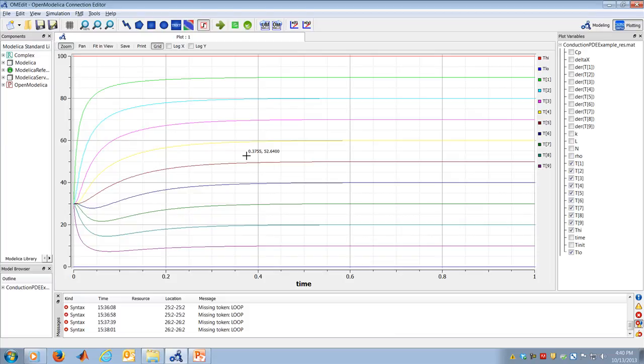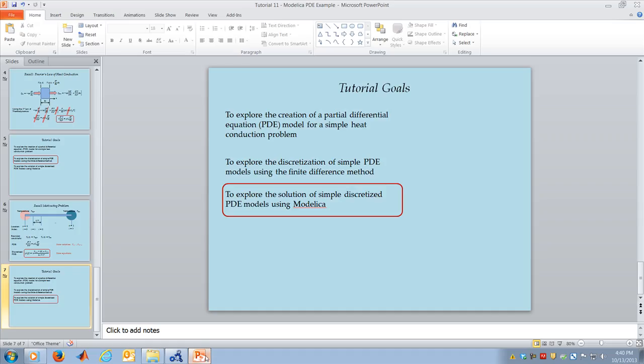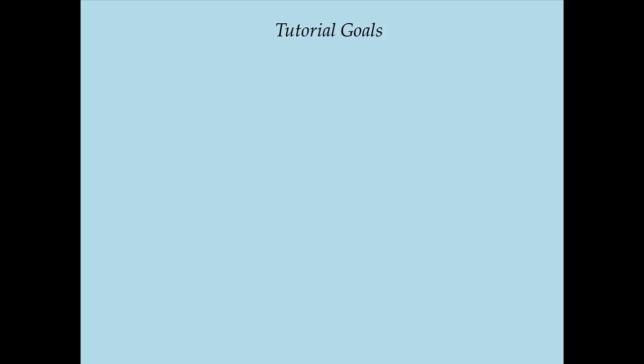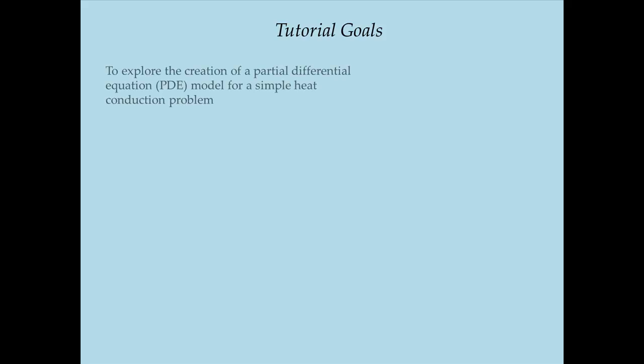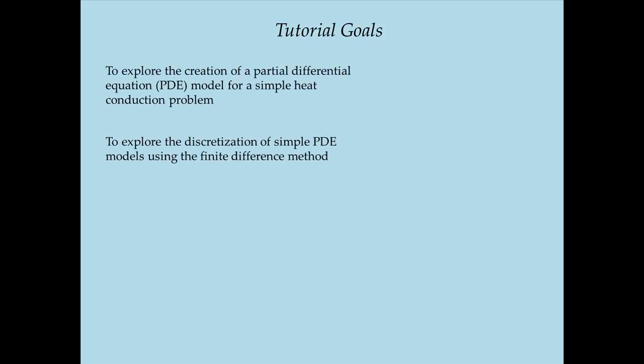I strongly encourage you to play with this Modelica code — see what you can do to make it run more accurately or perhaps faster, and explore the trade-offs between simulation speed and accuracy. At this point, we're done with the goals of this tutorial: building a PDE model of a simple heat transfer problem, discretizing it using finite differences, and implementing the resulting discretization in OpenModelica. Thank you very much for listening, and I look forward to the next tutorial.